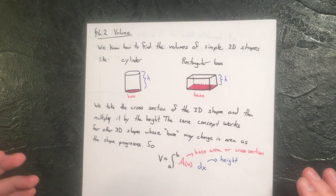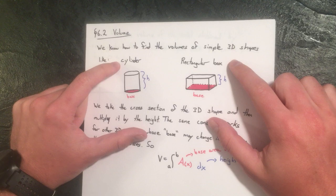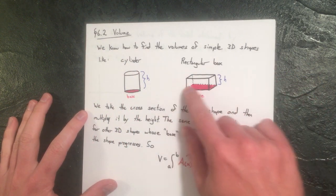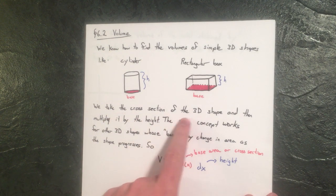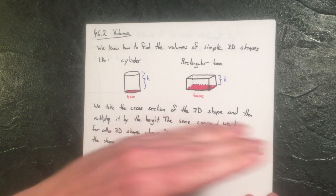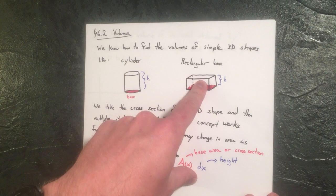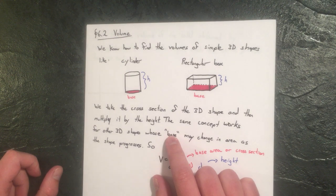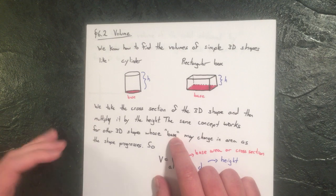Let's move on to volumes. We currently know how to find the volumes of simple 3D shapes such as cylinders or a rectangular box — you find how big the base area is and multiply it by the height. This is going to work for even harder 3D shapes: you take the cross-section of the 3D shape and multiply it by the height. If you cut that cylinder you get a circle; cut the rectangular box you get a rectangle.